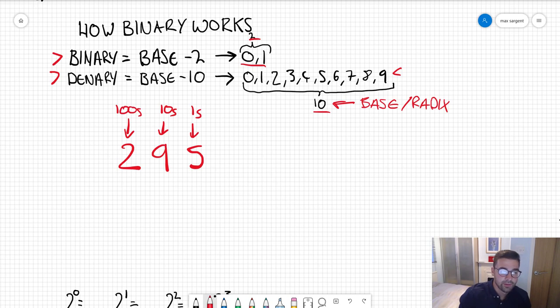What does this number mean to you? How do you draw value from this number? You know instinctively it means 295, but how you learned it was you looked at each column. This is your ones column, this is your tens column, and this is your hundreds column. So you get two times 100, nine times ten, five times one, you add them and that is the total quantity of 295.